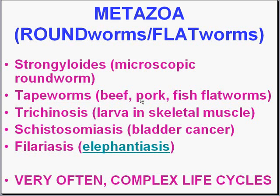This might be a good time to review our basic taxonomy. Remember that technically a metazoan is any member of the animal kingdom that has more than one cell. There are two kinds of animals: protozoans and metazoans. Protozoans have one cell; metazoans have multiple cells. That includes us technically. But in terms of practical parasitology, the metazoans are the worms.